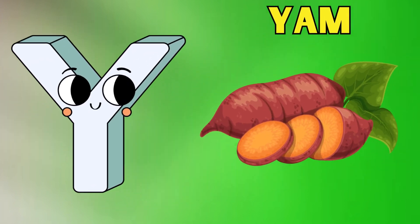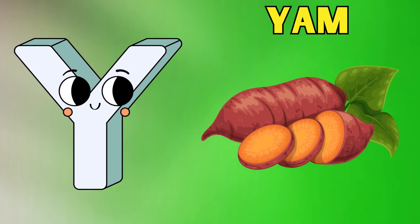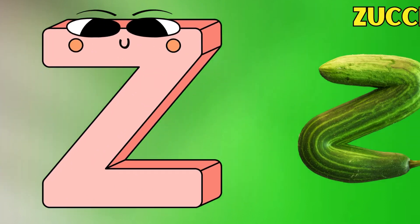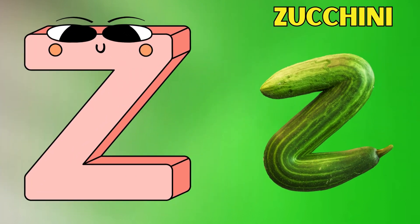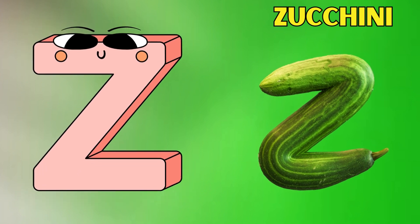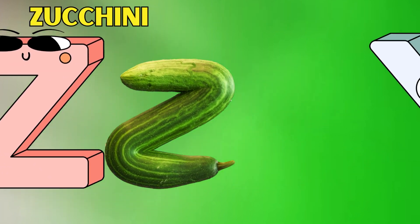Y is for yam — ya, ya, yam. Z is for zucchini — zh, zh, zucchini.